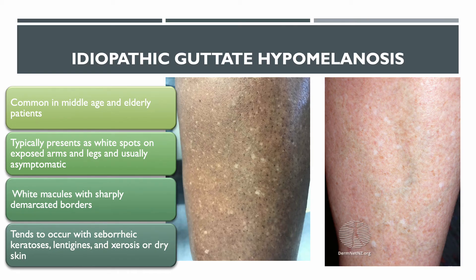Idiopathic guttate hypomelanosis is a type of lesion that you will encounter in a clinical setting. These lesions are common in middle-aged and elderly patients. They typically present as white spots on exposed arms and legs and are usually asymptomatic. They are characterized as white macules with sharply demarcated borders.